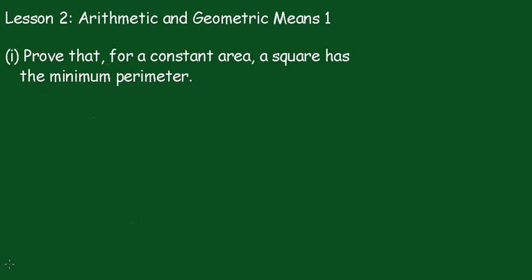This is number two, arithmetic and geometric means number one. Now in part one we're going to prove that for a constant area, a square has the minimum perimeter in relation to the rectangle.